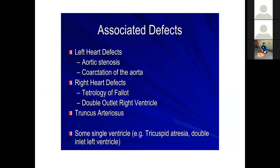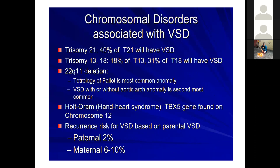Associated defects include: left heart lesions, TOF, DORV, truncus arteriosus, and sometimes single ventricle with VSD. Chromosomal disorders: trisomy 21 — 40% of patients have VSD; trisomy 13 and 18 have 18% and 31% respectively. In 22q11 deletion, TOF is most common, but VSD alone without aortic arch anomaly is the second most common. Holt-Oram syndrome is the most common inherited heart syndrome associated with VSD. Regarding genetics, paternal VSD carries a 2% recurrence risk and maternal VSD approximately 6–10%.